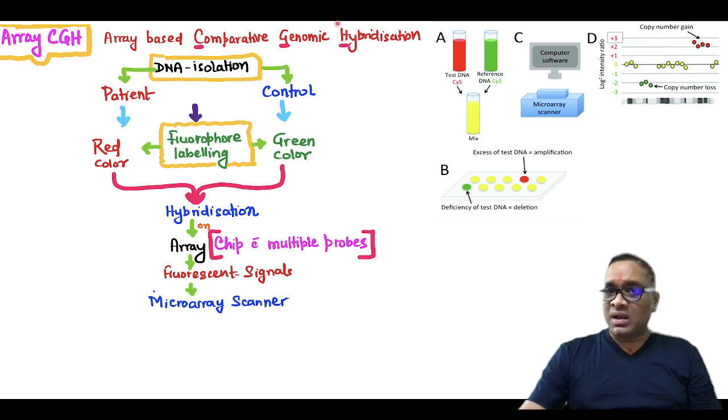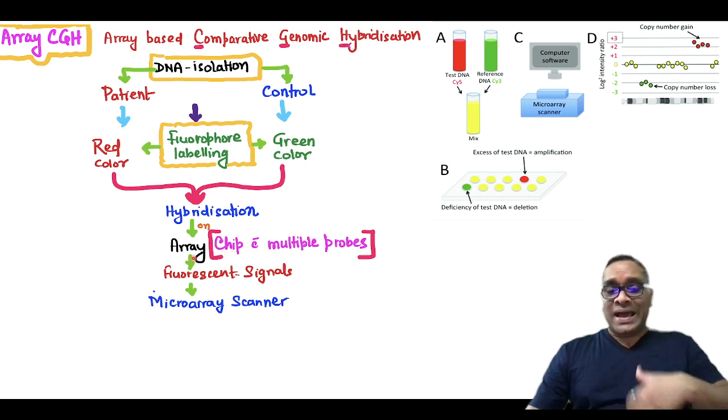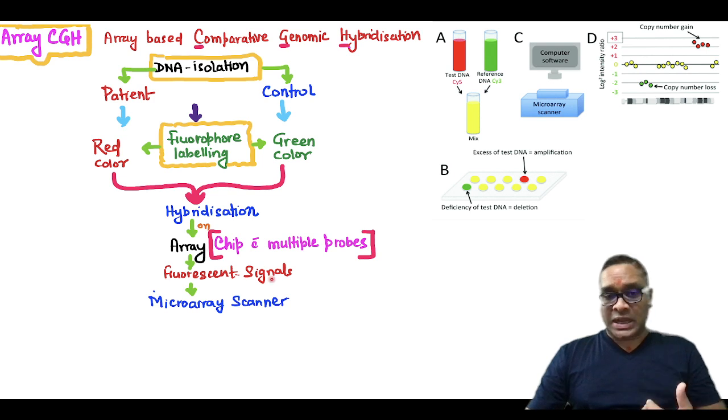What is the basic principle? Hybridization is the basic principle. What we do is we isolate DNA from the patient and the control, and then we will apply fluorophore labeling. Two types of fluorophore we are going to use: red color and green color. After that, we will do hybridization on the array. What is array? Array is a chip which is containing multiple probes. And then this array will release the fluorescent signals which will be received by microarray scanner.